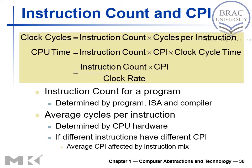Instruction count of a program is determined by the program itself, the instruction set architecture, and the compiler — these are software factors. Average cycles per instruction is determined by the CPU hardware.